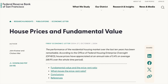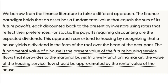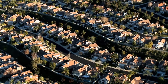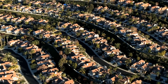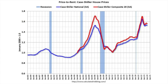Back to the price-versus-rent debate: in 2004, Fed economist John Cranor and a researcher wrote a Fed letter on price-to-rent ratios — linked in the description. One key aspect states: 'The fundamental value of a house is the present value of the future housing service flows that it provides to the marginal buyer. In a well-functioning market, the value of the housing service flow should be approximated by the rental value of the house.' Essentially, the rent you can charge is a good way to estimate what a house is actually worth. Looking at McBride's price-to-rent ratio chart, the index is off 7.5% from the recent peak, and by this measure, housing prices are severely elevated.